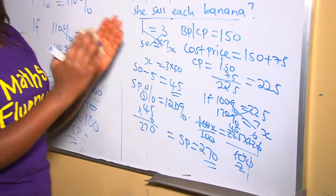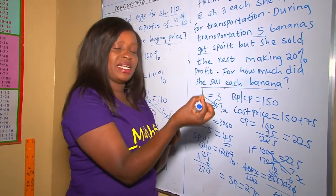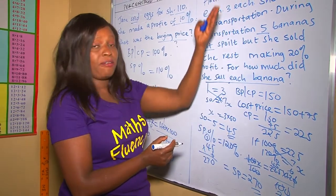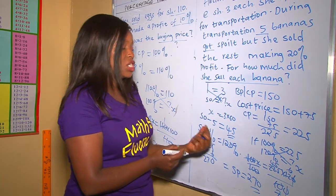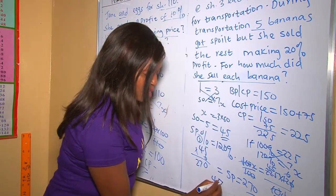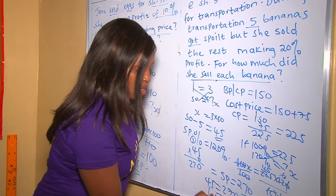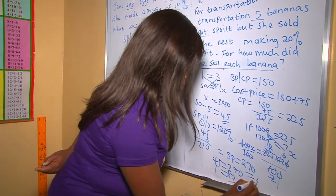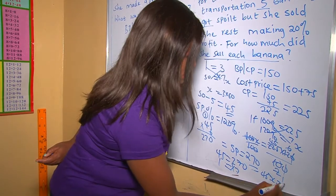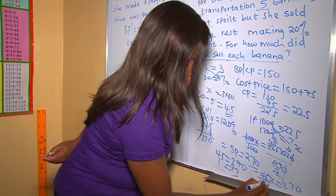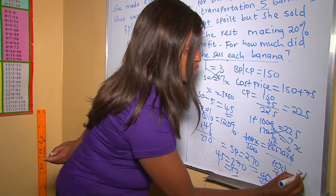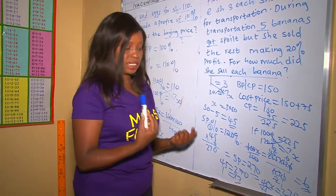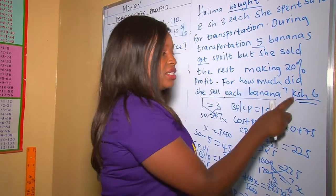We are asked: for how much did she sell each banana? There are 45 bananas going for 270 shillings total. So we divide: 270 divided by 45 equals 6 shillings. Therefore, each banana was sold for 6 shillings.